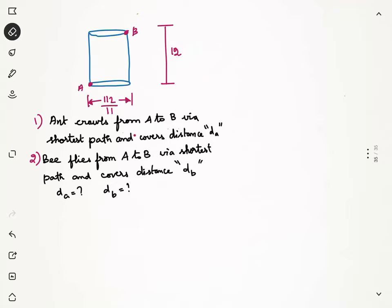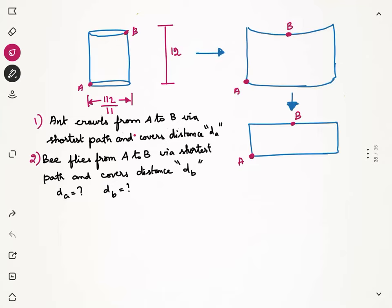Now, let us look at the case of ant. To understand the path traced by ant, let us unfold the cylinder. If you unfold, the cylinder is going to become a rectangle. As I can see, the height of the cylinder will become the height of the rectangle here. So, this length is 12. Whereas, the circumference of the circle becomes the topmost length of the rectangle.